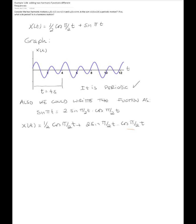Cosine of pi over two t appears in both terms, so we can factor it out. We can write this as one half cosine pi over two t times the quantity 1 plus 4 sine pi over two t.